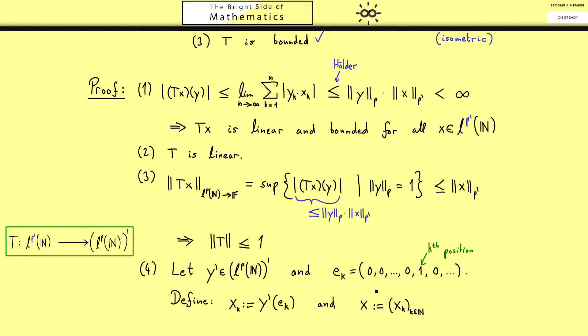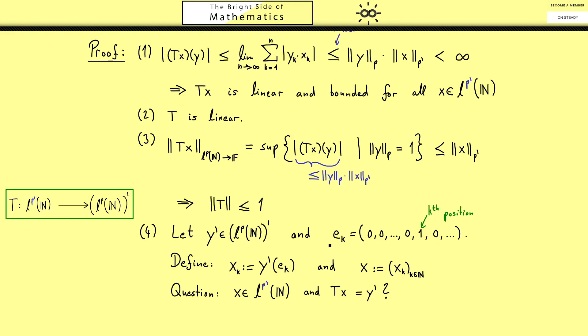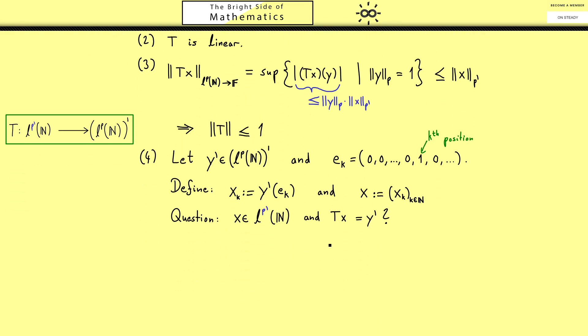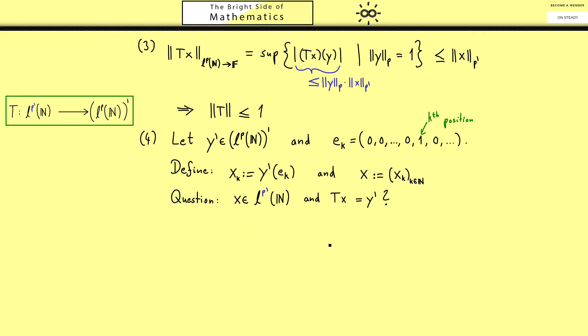We do this because we think this is a good candidate to be the pre-image of y prime under T. Therefore this is the question we have to answer: is x really in LP prime and does it map to y prime? Now this is the part of the proof which is not so easy to see. Therefore we have to try calculating a little bit.